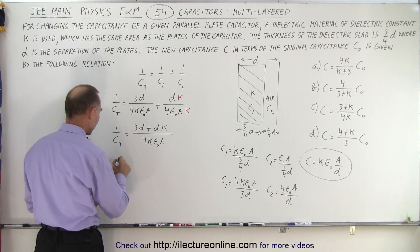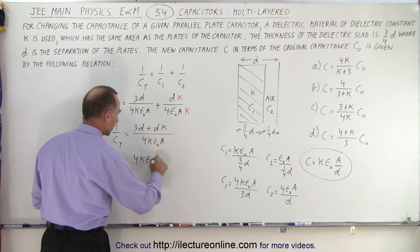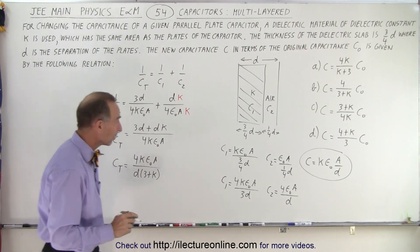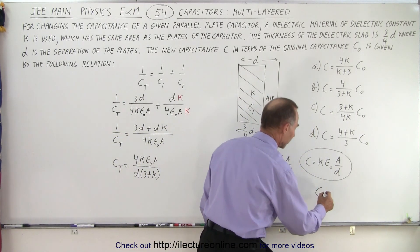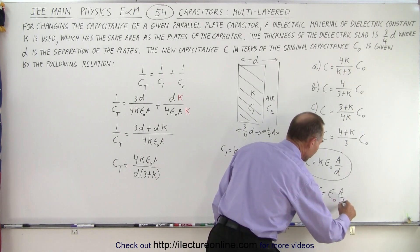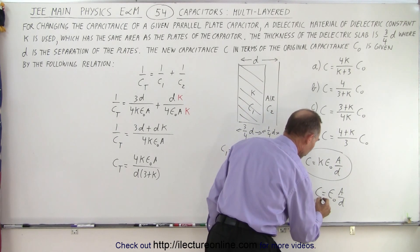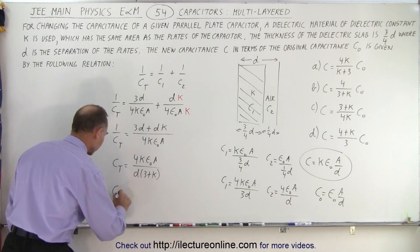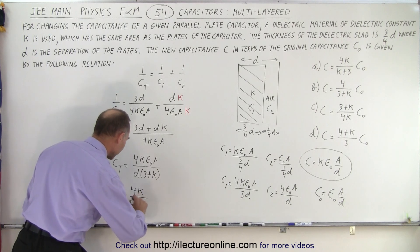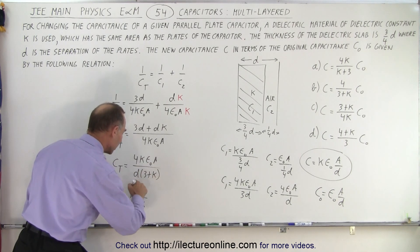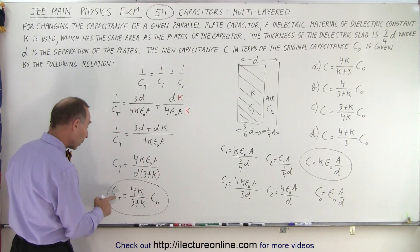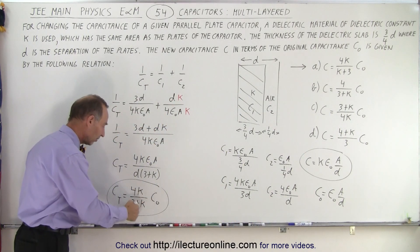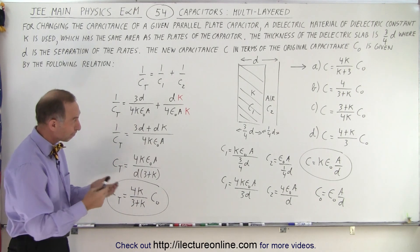Now we can add them together. We have 1 over C-total equal to 3D plus DK divided by the common denominator of 4K epsilon-naught times A. So C-total equals 4K epsilon-naught A in the numerator divided by — we can factor out a D — times 3 plus K in the denominator. The original capacitor C-naught, with just air in there, was equal to epsilon-naught A over D because K would be 1 if the whole capacitor were air. Therefore, C-total, the new capacitor, is equal to 4K divided by 3 plus K, times epsilon-naught A over D, which becomes the original capacitor C-naught. So the answer is 4K over K plus 3 times C-naught, which corresponds to answer A.